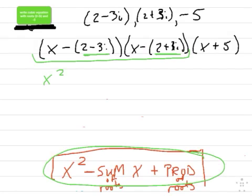The sum is 4, so I'm going to subtract, because I take the opposite of the sum. I'm going to subtract 4x. And what's the product of those two roots? It's going to be 4 plus 9. It's 13.